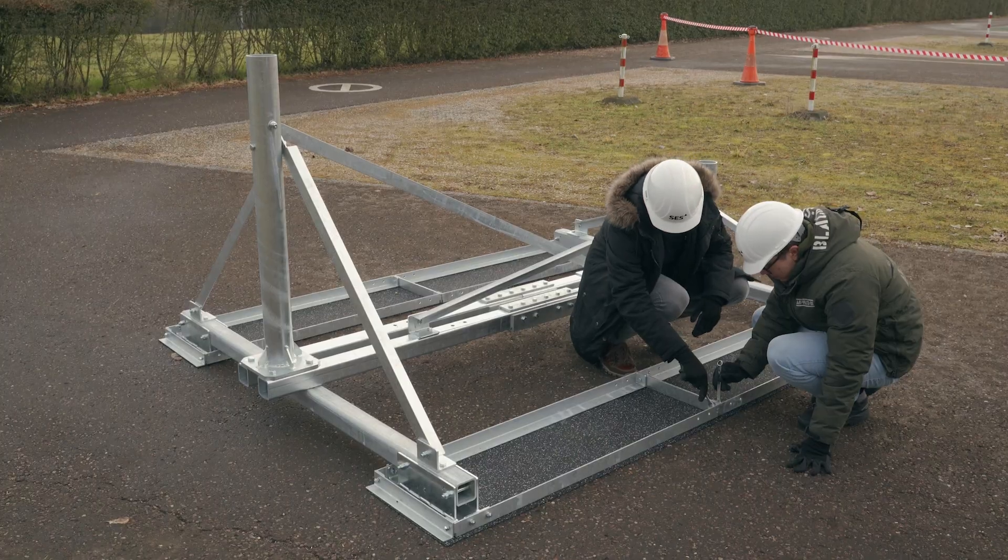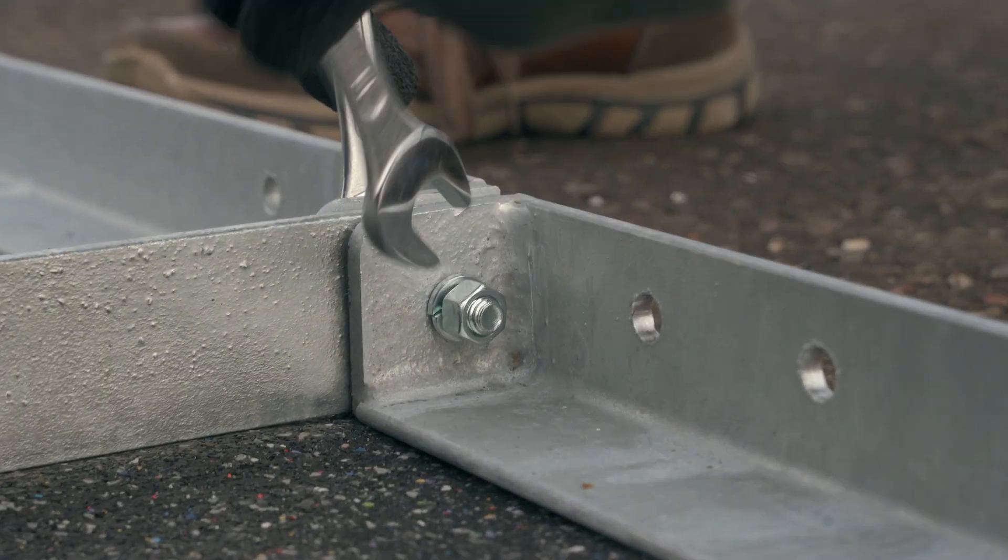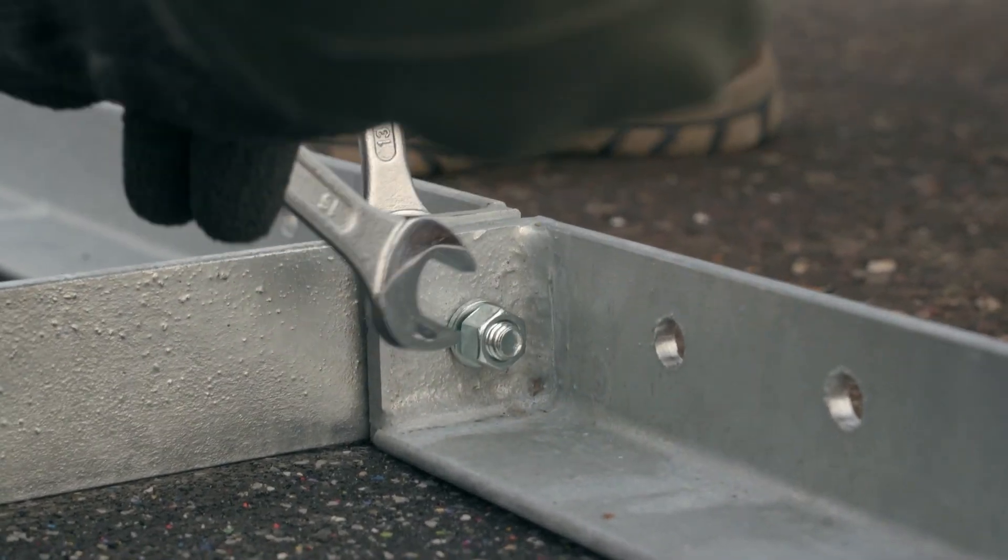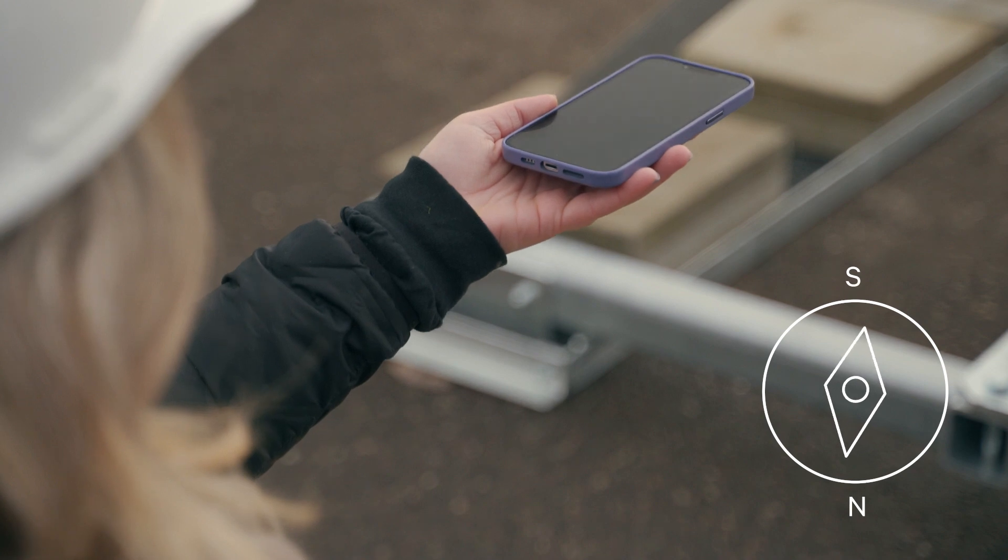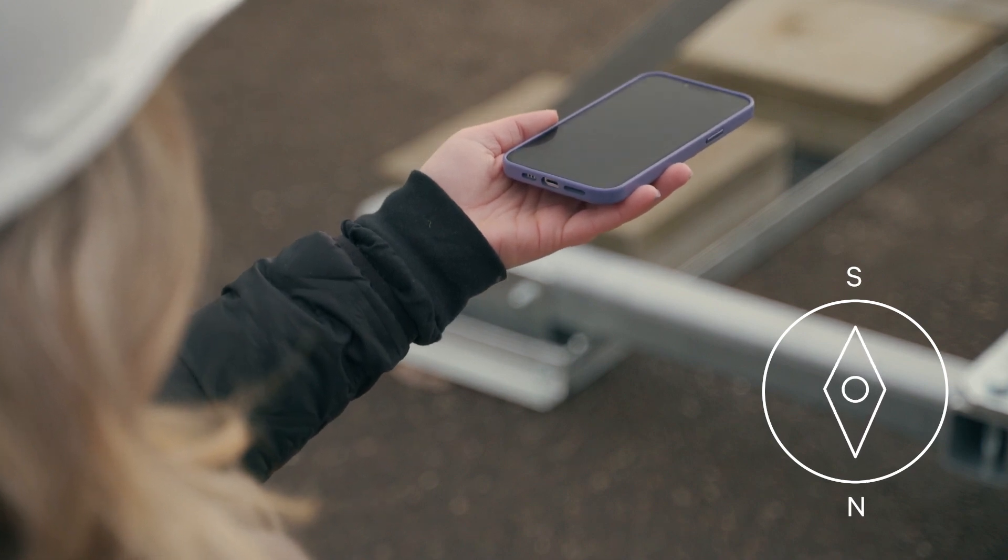At this point, fully tighten all ballast tray bolts. The mount is now assembled, do a final check to make sure the mount is in a north-south alignment.